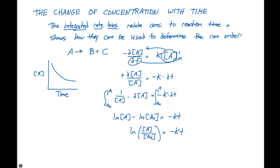We can use properties of natural logs to get rid of the negative sign, because textbooks prefer not to include it. So this becomes: ln[A₀] over [A] equals Kt. This expression is the integrated rate law for a first order reaction.